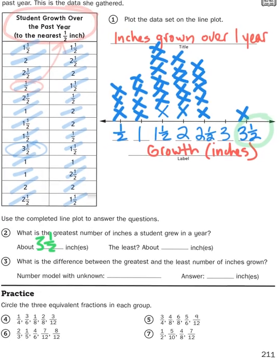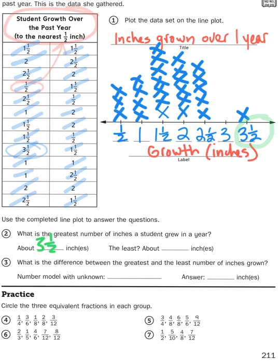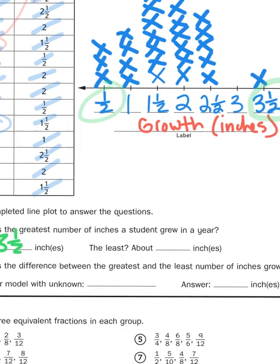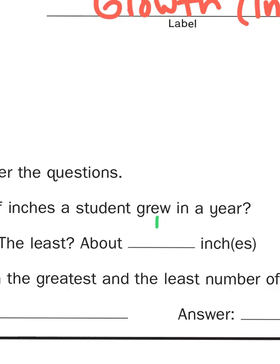What was the least? Well, again, that's the left hand side of my number line. Which is a half. So the smallest amount anyone grew was a half. Half is better than none, I guess.